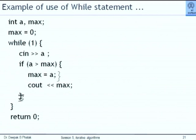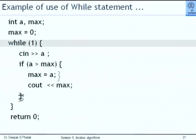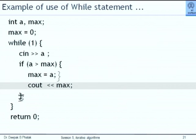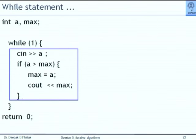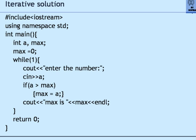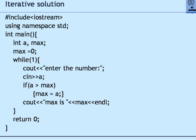I have written a program: int a, max; max = 0; while(1) { cout << "enter the number"; cin >> a; if (a > max) max = a; cout << max; }. This iterative loop will be executed repeatedly if the condition is true. The program has the corrected syntax for cout.